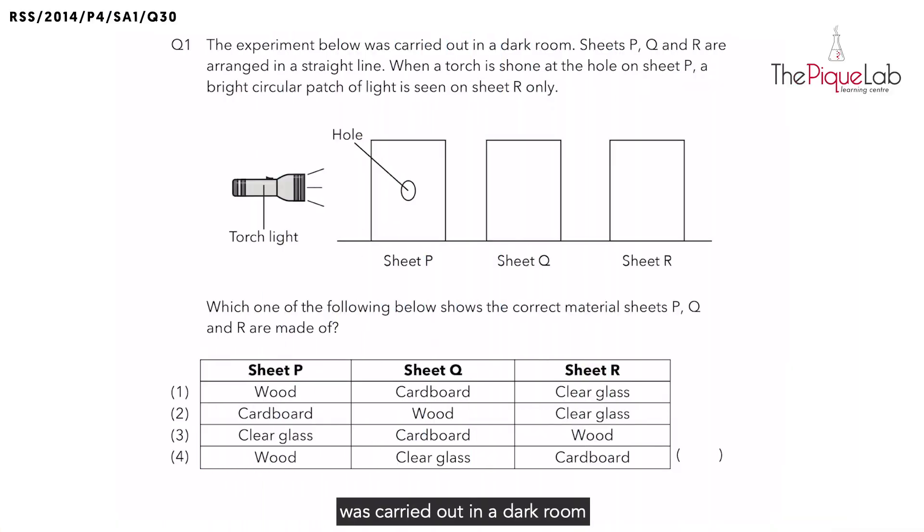The experiment below was carried out in a dark room and we have three different sheets. We have P, Q and R arranged in a straight line. When the torch is shone at the hole on sheet P, a bright circular patch of light was seen on sheet R only.